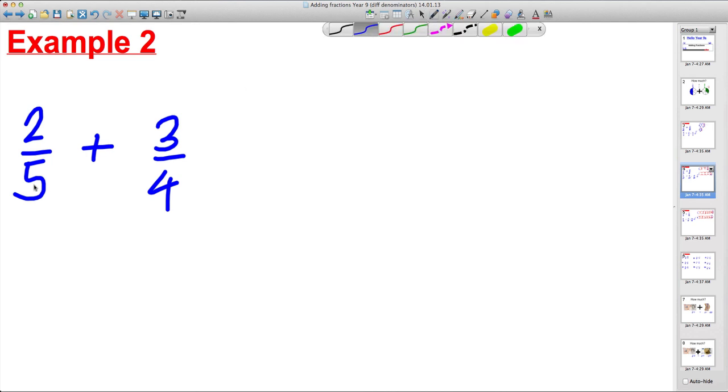2 fifths plus 3 quarters. So, we can't add them yet, because the bottoms are different. So let's write 2 fifths over here and let's write 3 quarters over here.